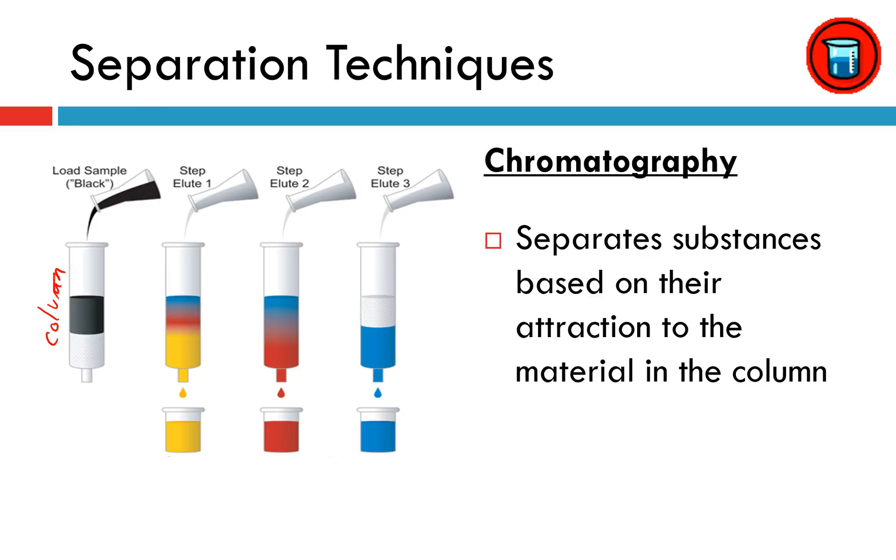So if you take a look at the different color inks that are being eluted, the blue ink is most attracted to the material in the column. It's the last one to come out so it took the longest time. Where the yellow ink is not particularly attracted to or interested in what is in the column and it came out relatively quickly.